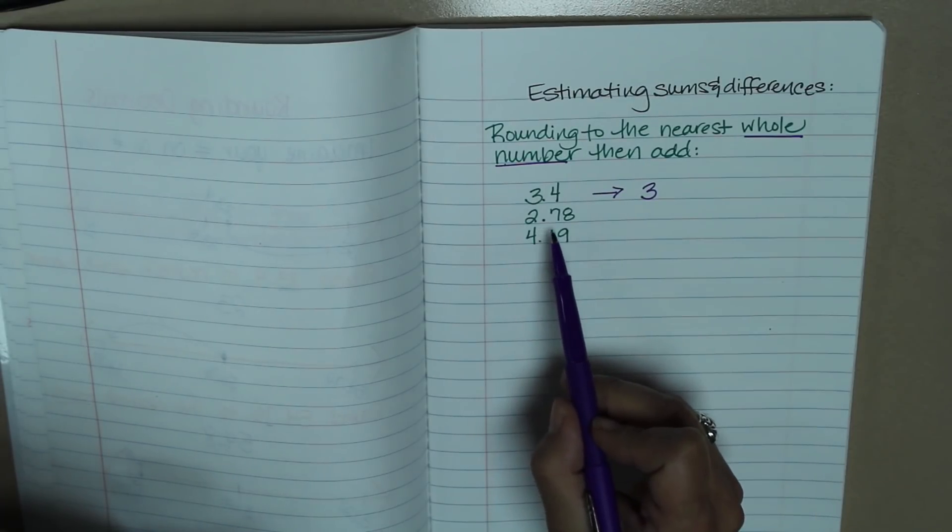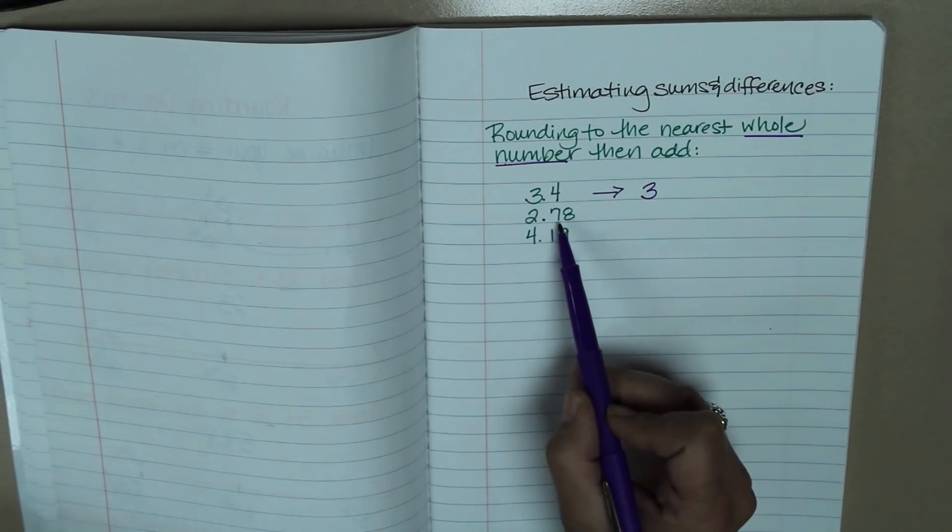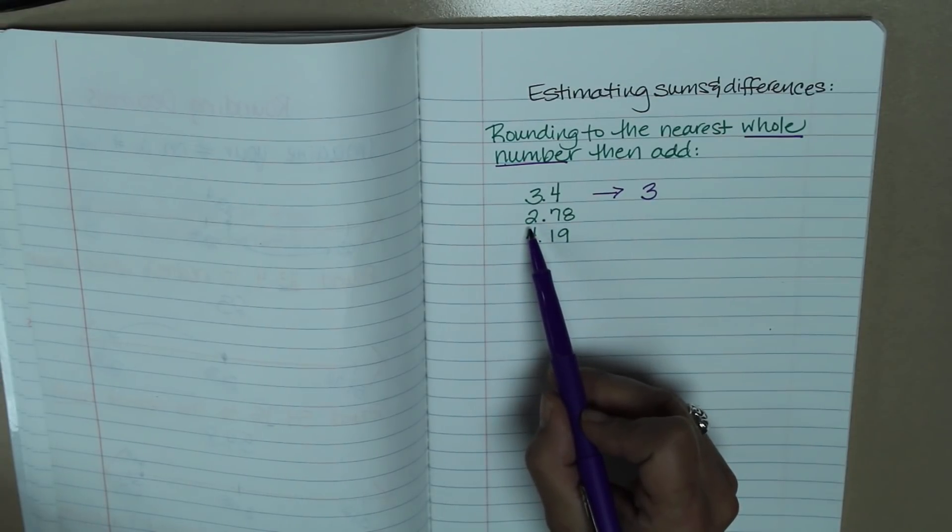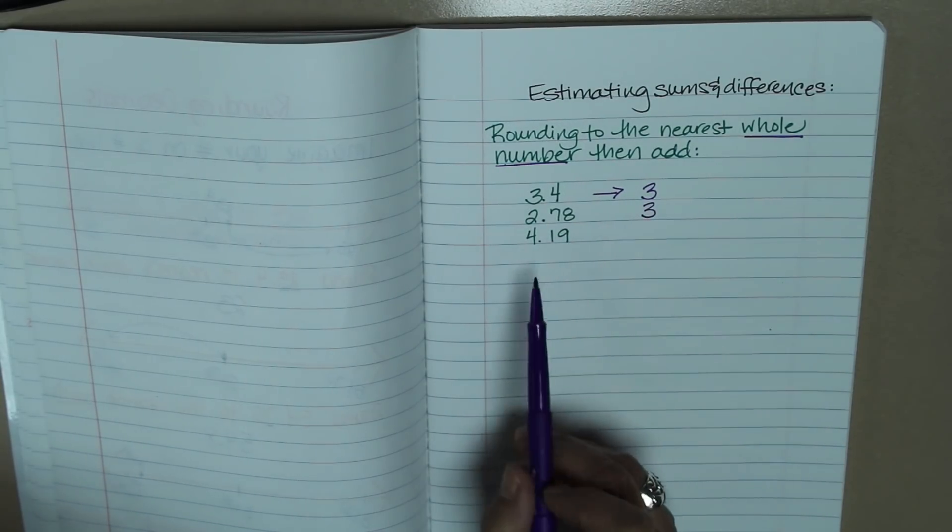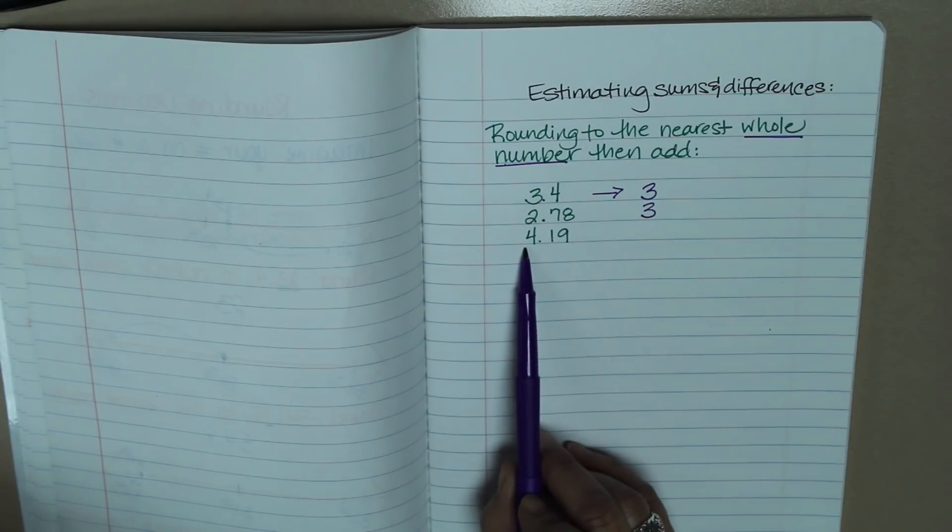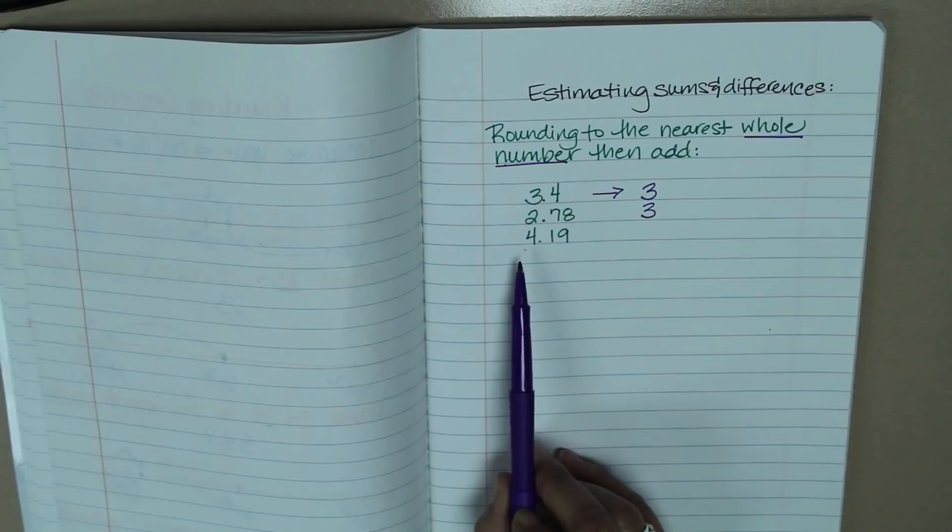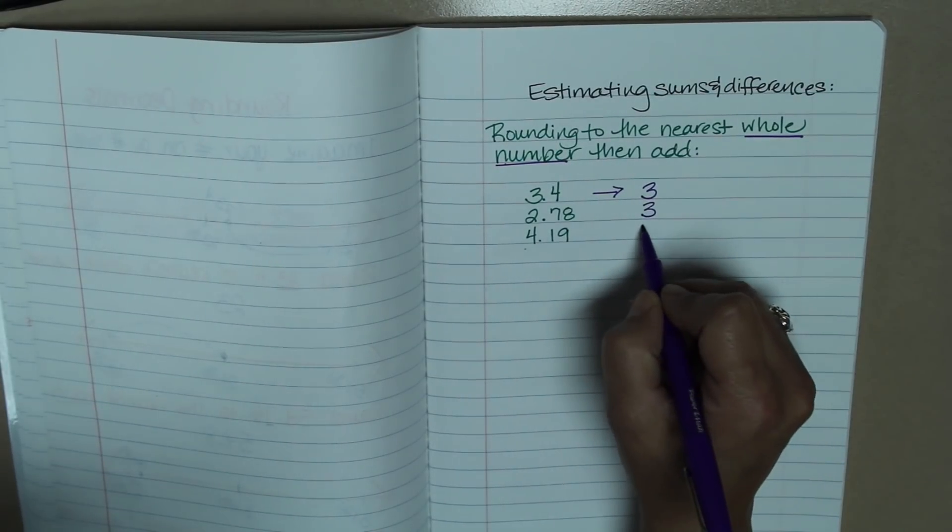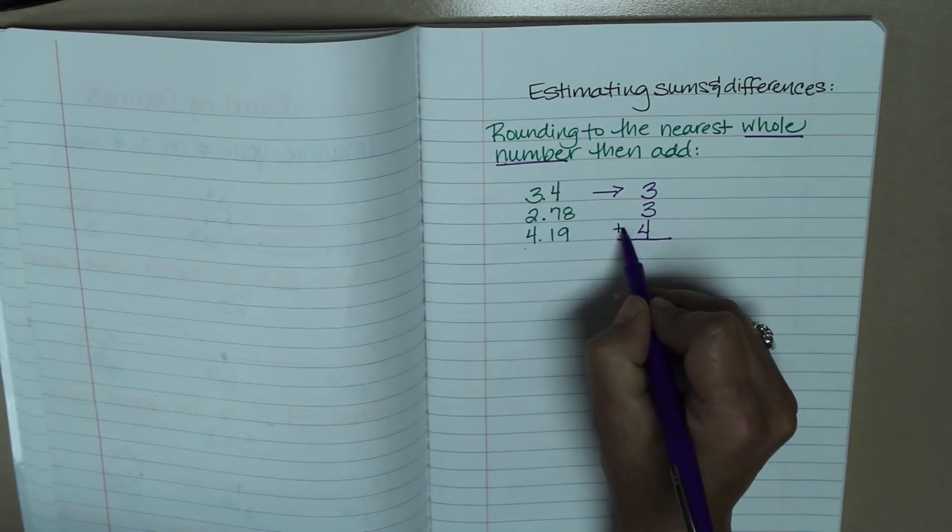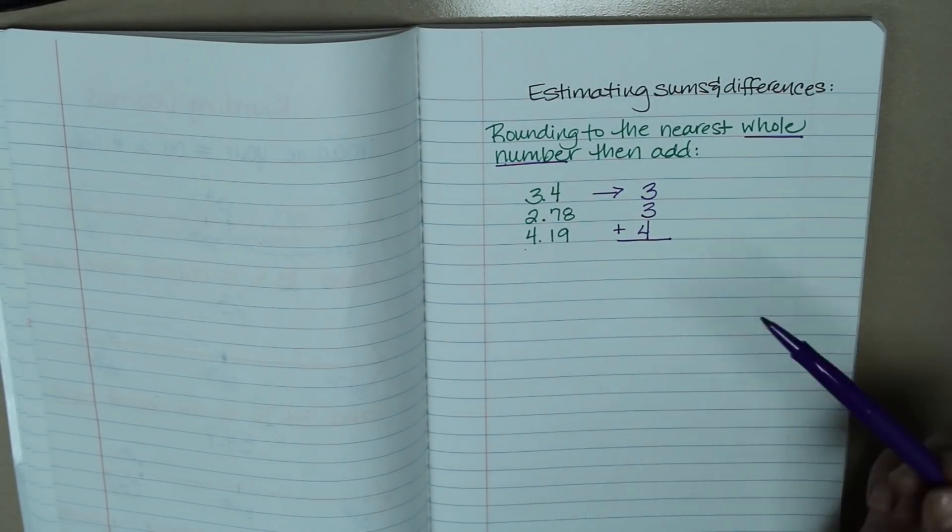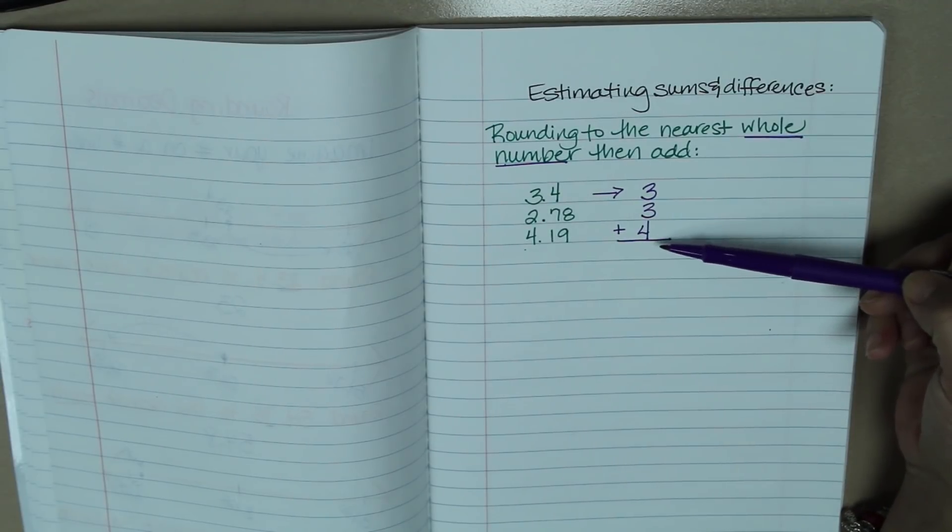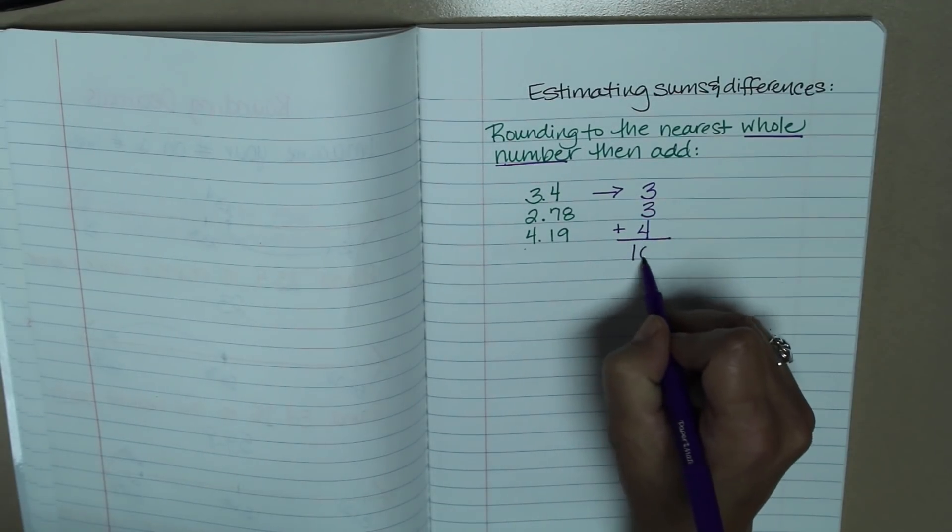If I rounded 2 and 78 hundredths, well, the 7 would determine whether the 2 stayed the same or went up. And because it's larger, 5 or larger, it will go up to 3. And then 4 and 19 hundredths, we do know that the 1 determines whether the 4 stays the same or goes up. And it does go up, so we'll bring that to a 4. So now I can easily add by just rounding. I'm going to add 3 plus 3, which is 6, plus 4, which gives me 10.